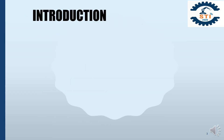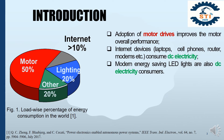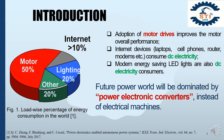Figure 1 shows the roadways percentage of energy consumption in the world. From this figure, it is seen that around 50% of power is consumed by motor devices. Lighting devices allocate around 20% of total energy. On the other hand, 10% of total energy is distributed by internet devices. By adoption of motor devices, we can improve the motor overall performance. The use of DC-powered LED light can reduce total consumption by around 75%, so power electronics converters will be dominated in the set of electrical machines.